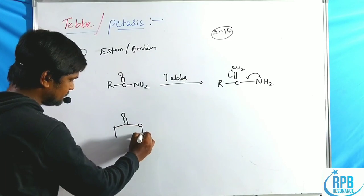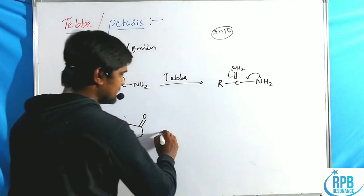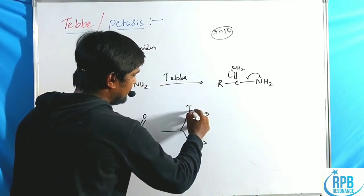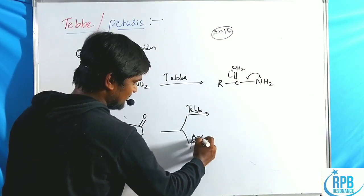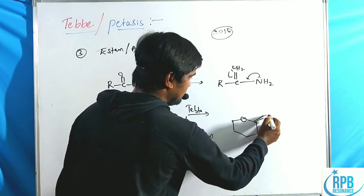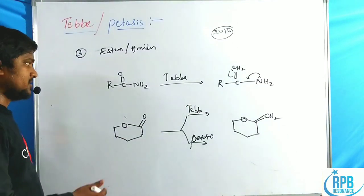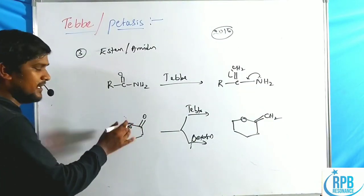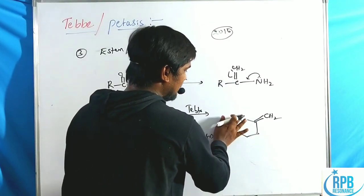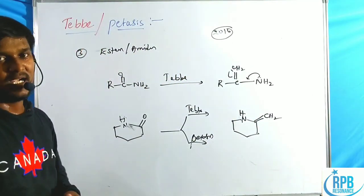Cyclic esters are called lactones. When lactones are treated with Tebbe or Petasis reagent, they give a C=CH₂ methylenated product. Similarly, cyclic amides are called lactams, and treatment with Tebbe/Petasis gives a product with an exocyclic C=CH₂ along with the NH retained.